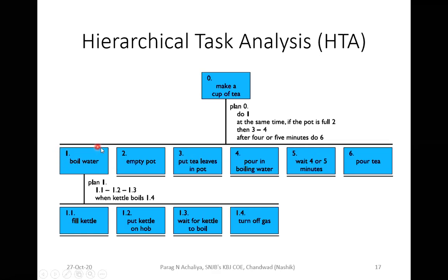Sub-task 1 is again divided into more sub-tasks: 1.1 — how to boil the water. For that, you fill the kettle, put the kettle on the hob, wait for the kettle to boil, then turn off the gas. So sub-task 1, boiling water, is divided into further sub-tasks. Following this structure through step 6 means the main goal has been successfully achieved. You can see this is level 1, level 2, and level 3 — this is how HTA or Hierarchical Task Analysis works.